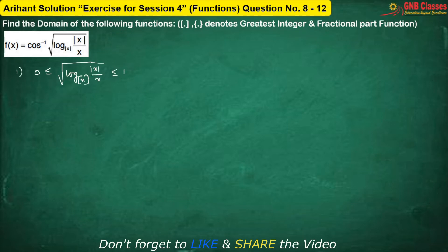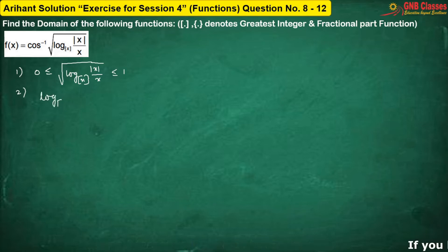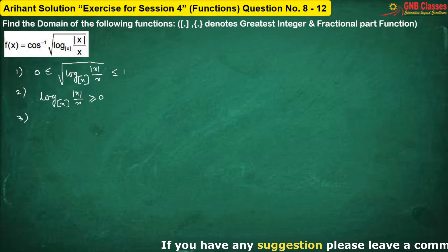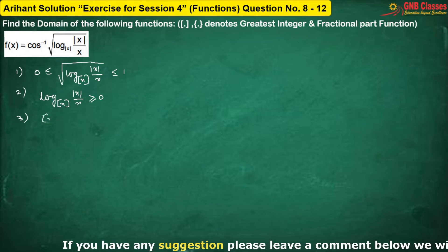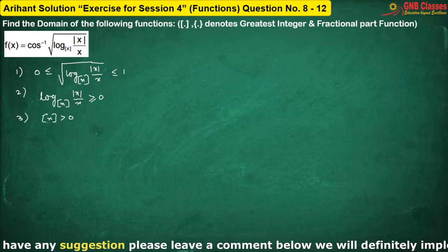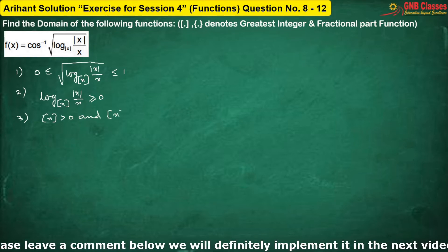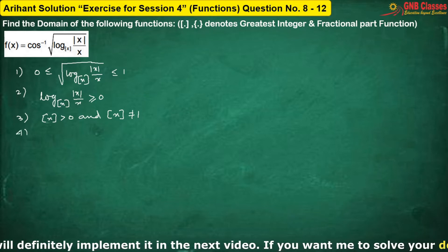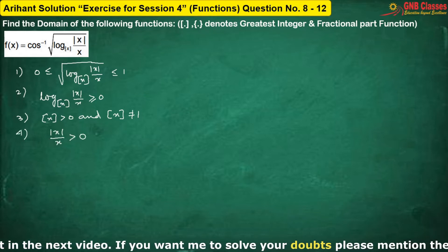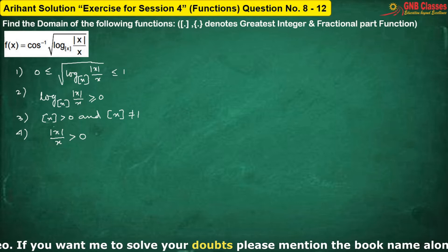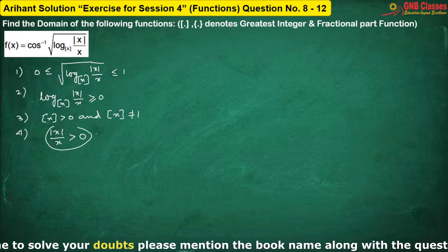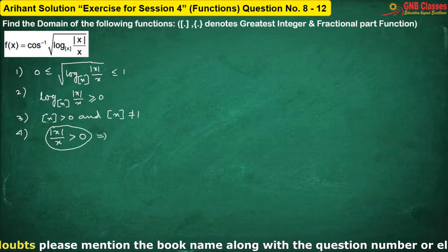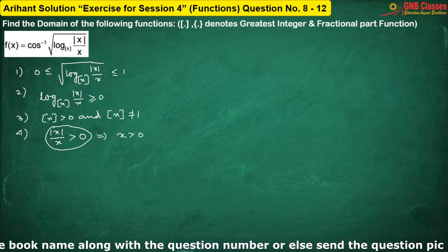This is the first condition. The second condition is to define the function. The third condition: the base for log is floor(x), so floor(x) has to be greater than 0 and floor(x) cannot be equal to 1. And the fourth condition: mod(x) divided by x is greater than 0, which implies x is greater than 0.